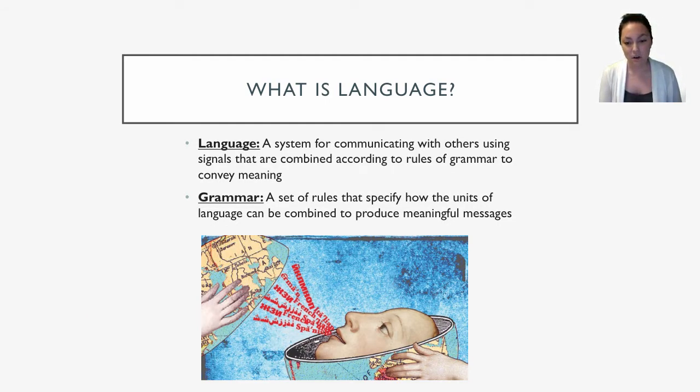So tying this all back into the definition of language we can come to a more technical way of thinking about language. This would be a system for communicating with others using signals that are combined and that abide by a set of grammatical rules in order to convey significant and meaningful messages. And grammar is a set of rules that specify how these units of language can be combined in order to effectively convey these messages.